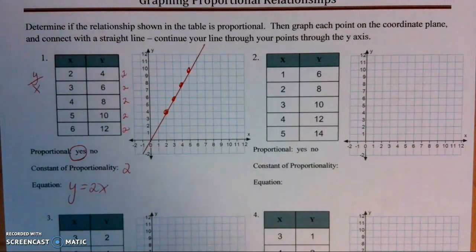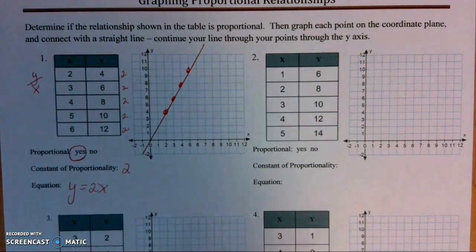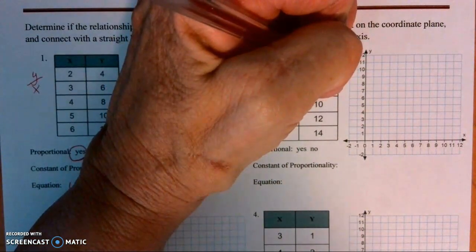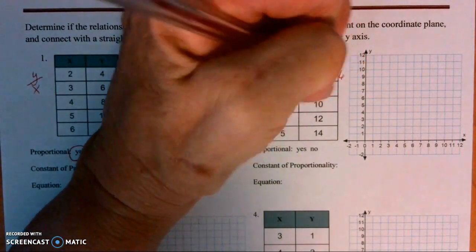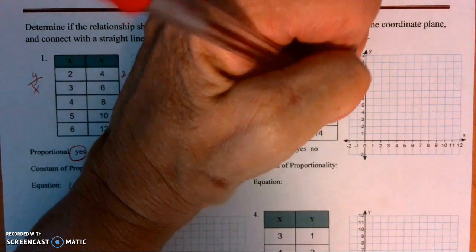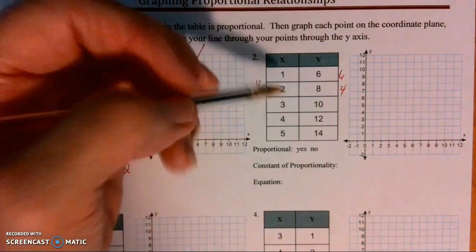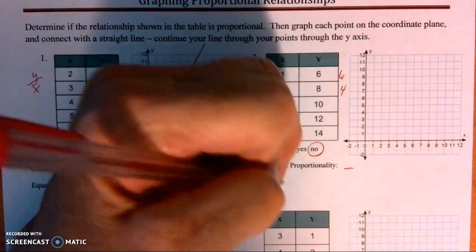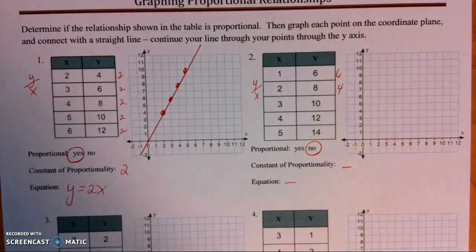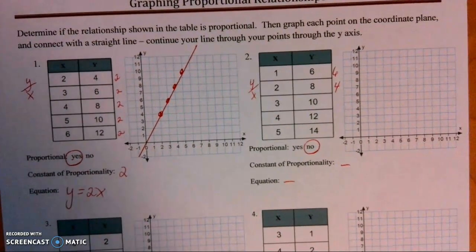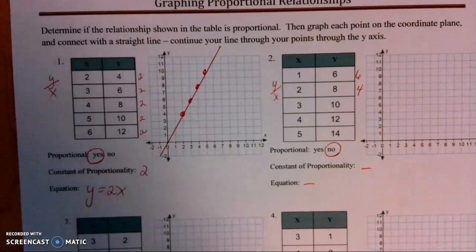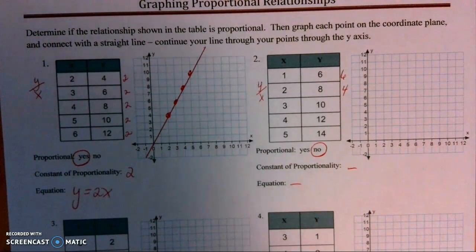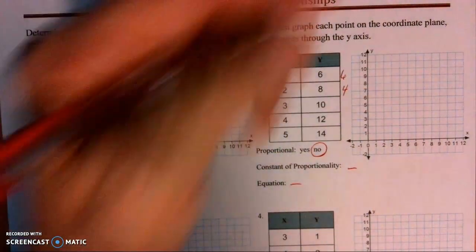Let's go into the second one. Again, remember y divided by x. Here we get 6, but then 8 divided by 2 is 4 — so I can already tell this is not proportional. There is no constant and there's no equation. As soon as you find one ratio that does not simplify the same, you're done.